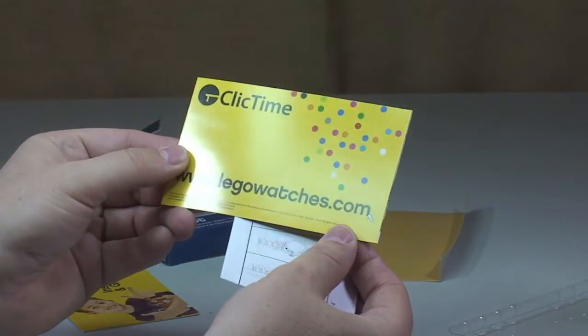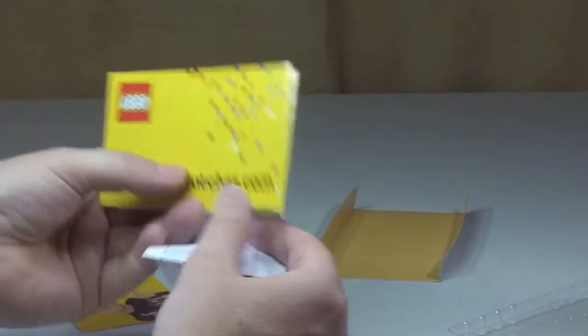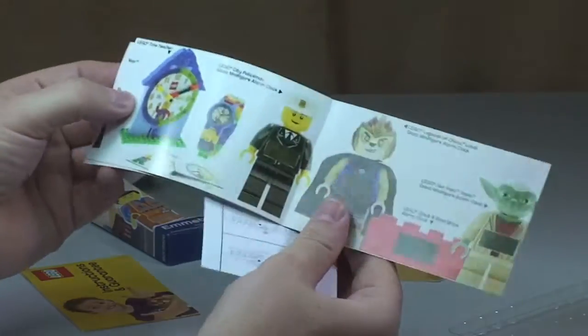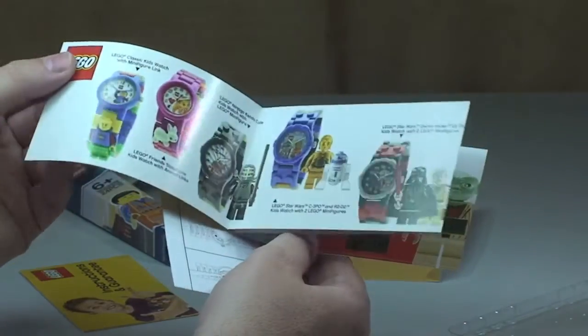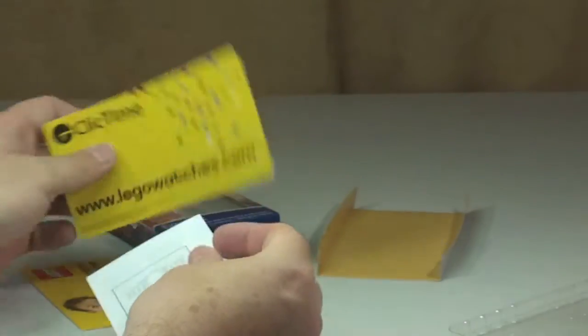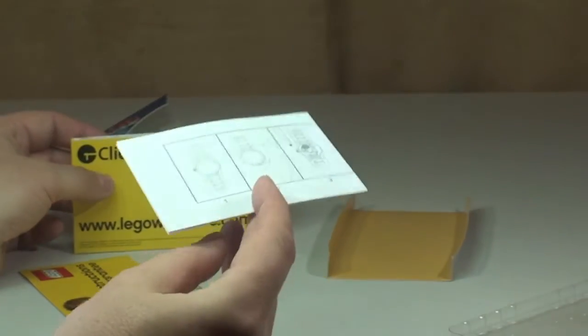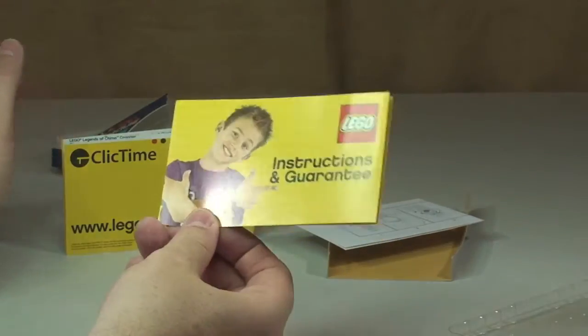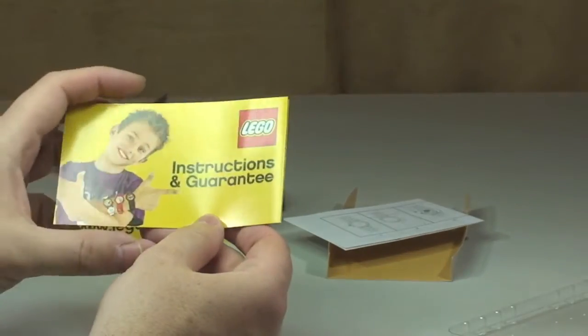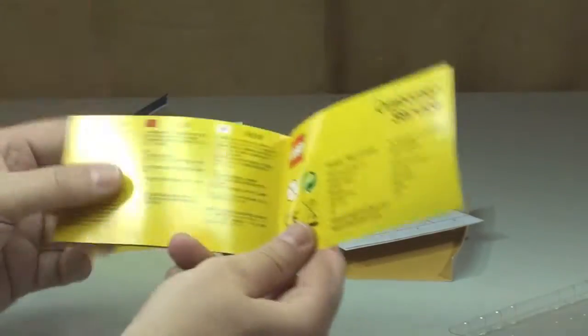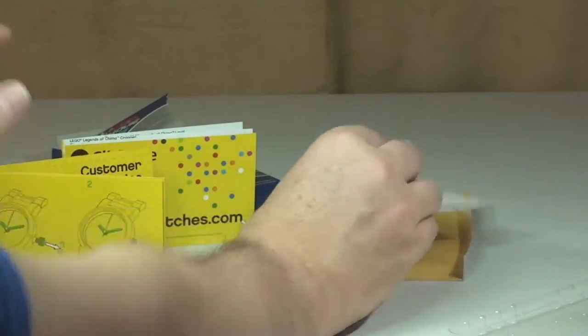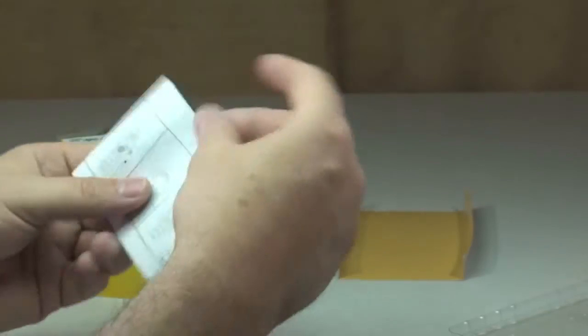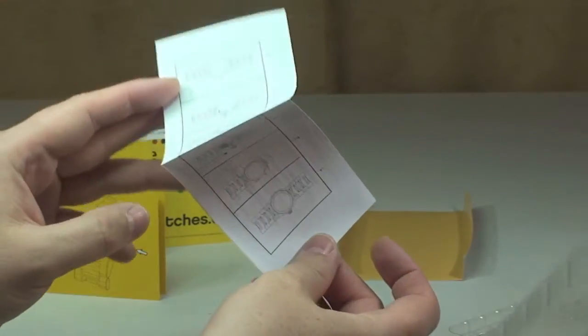I'll turn it away so we can see the camera. We have legowatches.com, so some other things from the range of watches and clocks. That's quite good. That's obviously going to be some sort of instructions, instructions and guarantee in there. That's a change in the battery. That shows you how to remove the battery to change the battery.